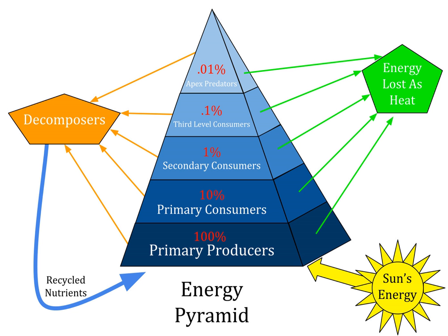A Pyramid of Numbers shows graphically the population of each level in a food chain. It is an upright pyramid in an ecosystem where usually the producers are more in number than any other trophic level. This shows the number of organisms at each trophic level without any consideration for their size. This type of pyramid can be convenient, as counting is often a simple task and can be done over the years to observe the changes in a particular ecosystem. However, some types of organisms are difficult to count, especially juvenile forms.